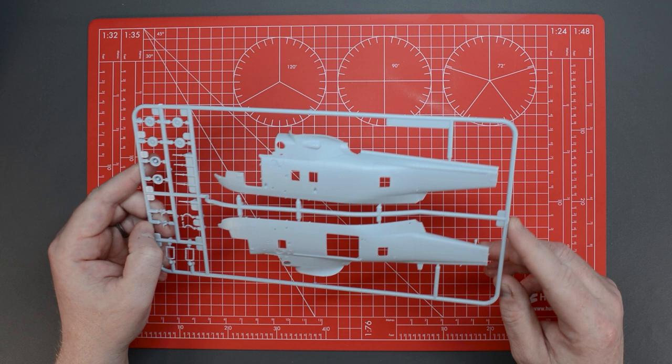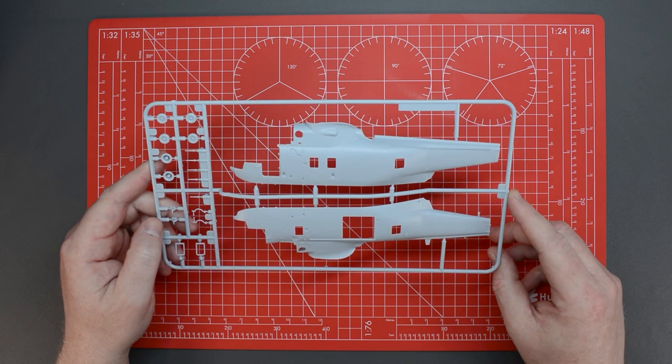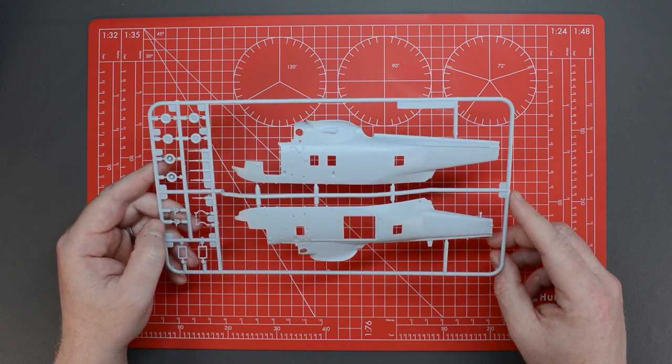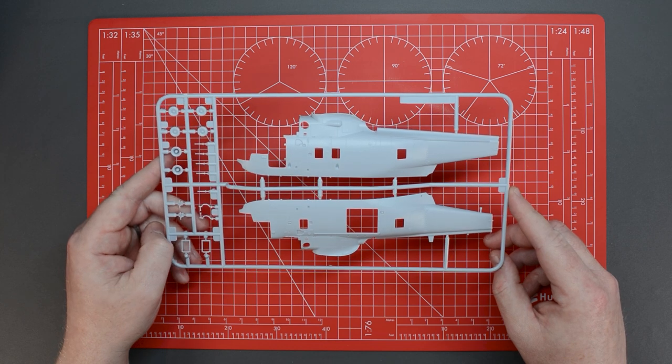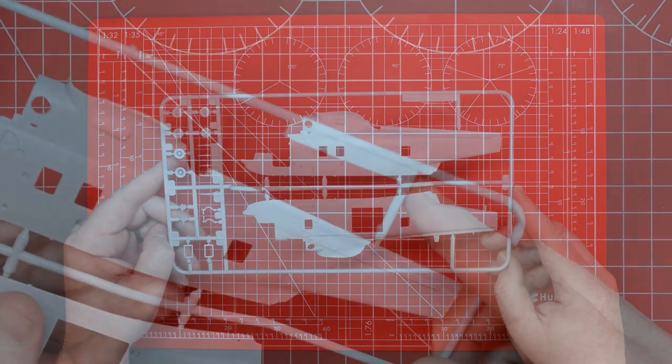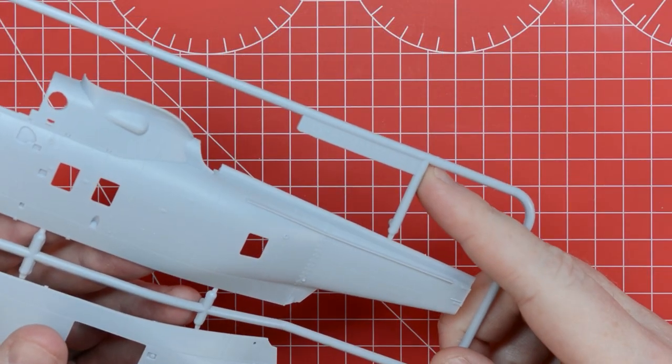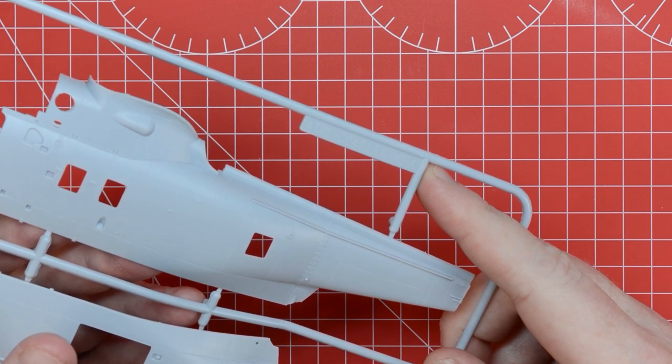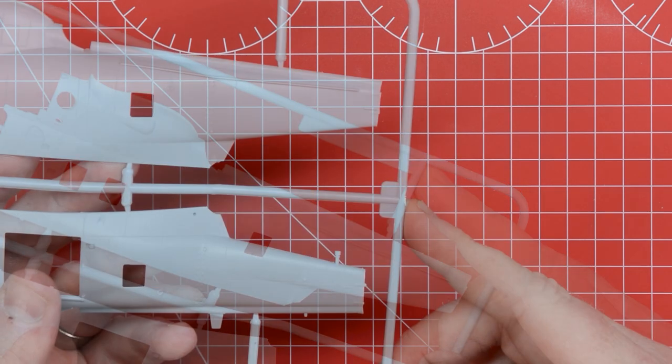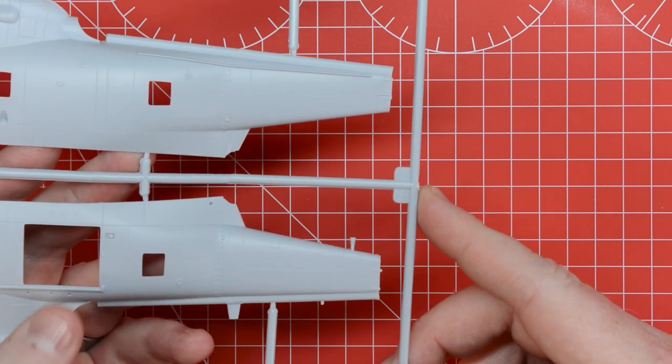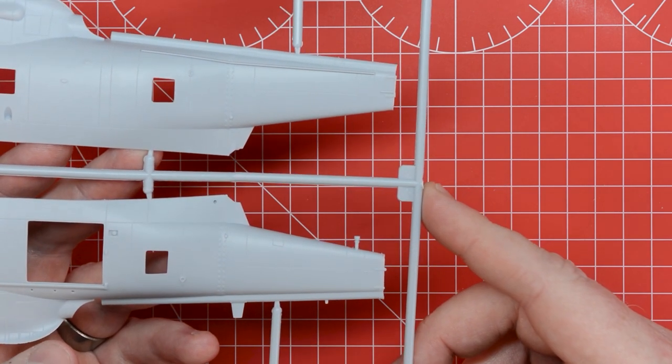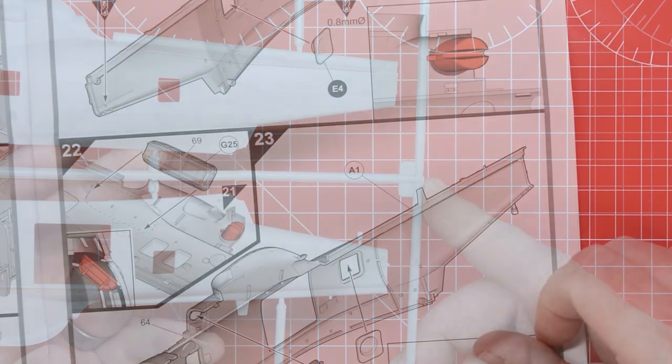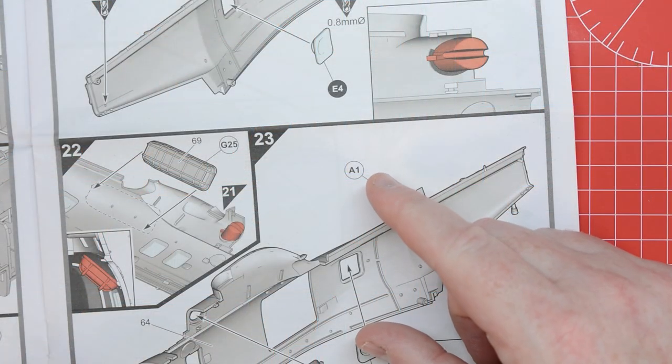If you're not familiar with model kits the parts come supplied on these frames which are part of the injection moulding process but are also used to organise the parts. Each frame has a rectangular tab into which is moulded an identifying letter. Next to the parts themselves a smaller tab contains an identifying number. This combination of letter and number is referenced in the circular callouts in the instructions.